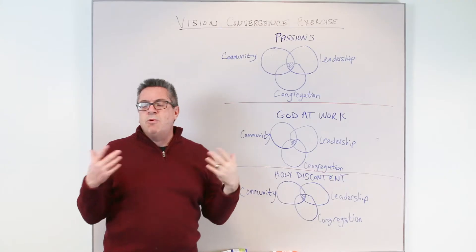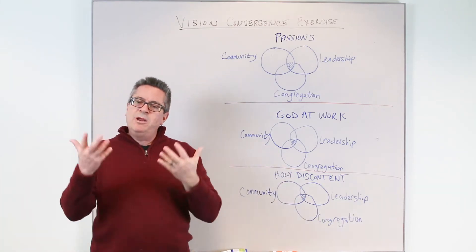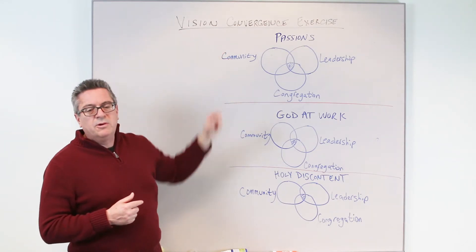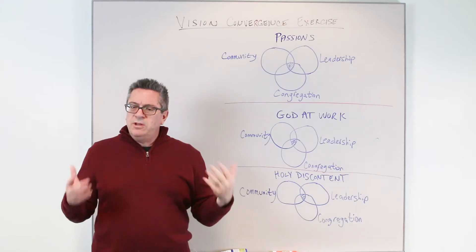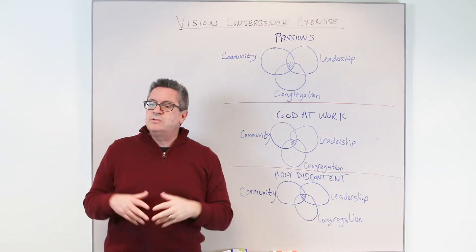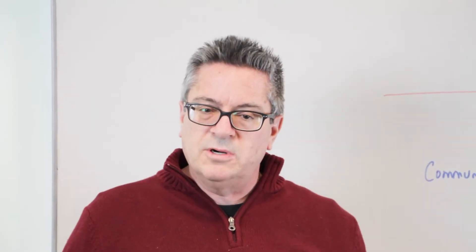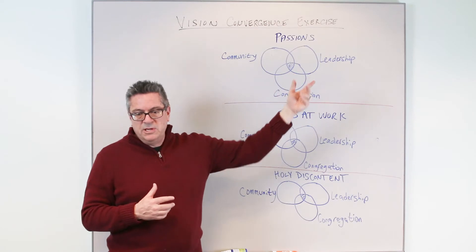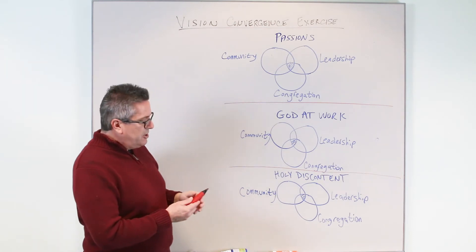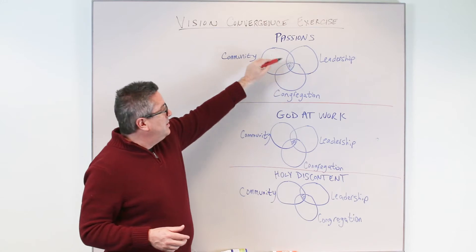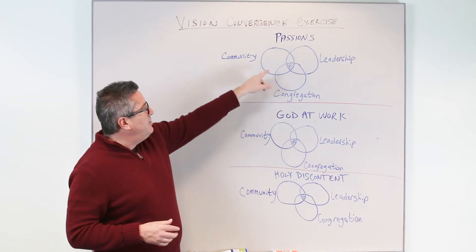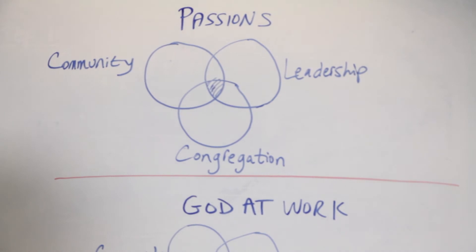The first one relates to passions. One way to identify where vision might be bubbling up is to think about areas of common passion. What is it that your community — the place in which your church is located — what unique things are people passionate about there? Then also, as a congregation, what is your church passionate about? And finally, as a leader and leadership team, what makes your heart race? When you find areas of shared passion, that's the sweet spot right in the middle.